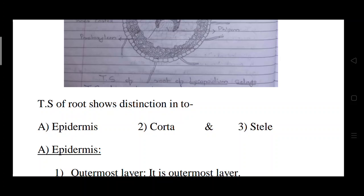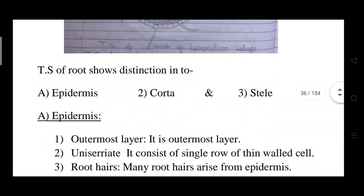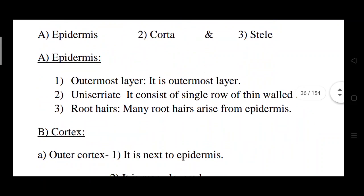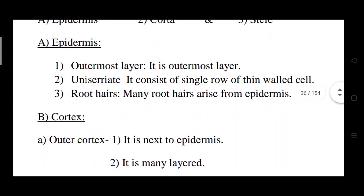The transverse section of this root is distinguished into three parts: epidermis, cortex, and stele. The epidermis is the outermost layer, made of a single layer of thin-walled cells — that is why it is called uniseriate. On that epidermis the root hairs are present.